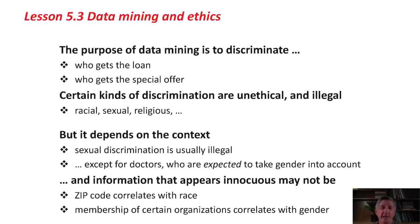It depends on the context. Sexual discrimination is usually illegal, except for doctors. Doctors are expected to take gender into account when they make their diagnoses — they don't want to tell a man that he's pregnant, for example. Also, information that appears innocuous may not be. Area codes and zip codes in the United States correlate strongly with race. Membership of certain organizations correlates with gender. Although you might have removed the explicit racial and gender information from your database, it still might be inferred from other information that's there. It's very hard to deal with data — it is a way of revealing secrets about itself in unintended ways.